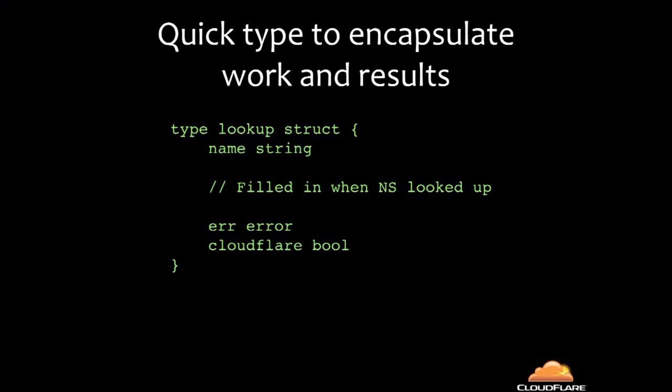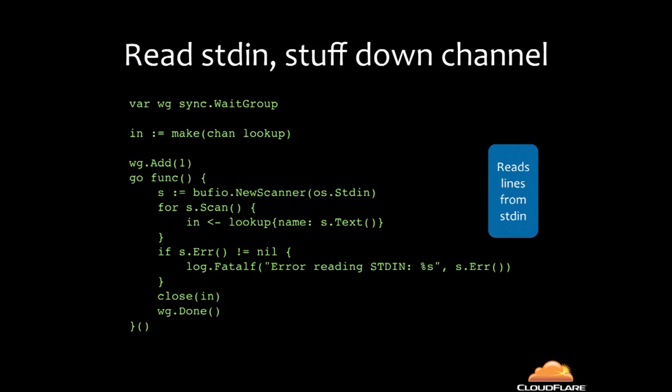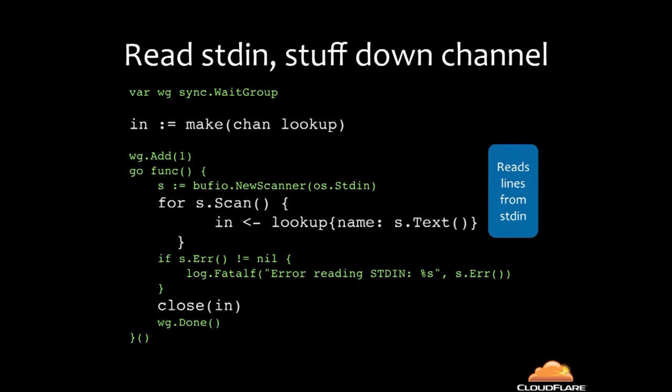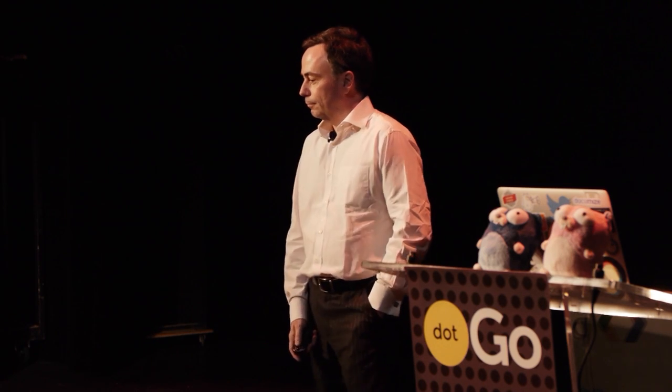First, I created a lookup type. The lookup type has a name — the actual website being looked up — and when it comes back out it has a flag saying whether it was on Cloudflare, and also an error in case something went wrong. Reading stdin and stuffing it down a channel is pretty simple — you use a bufio.Scanner. That middle loop is three lines: create a lookup struct, stuff it down a channel, and when you're done close the channel.